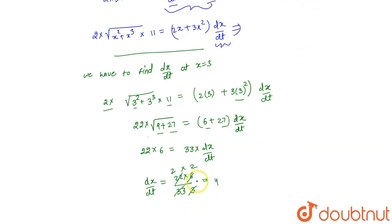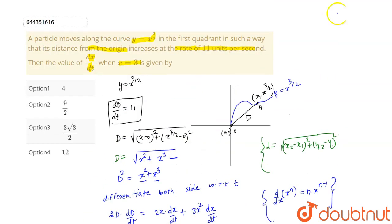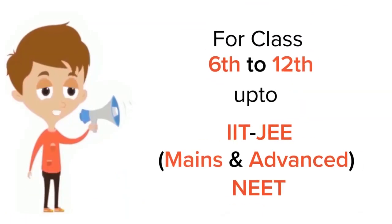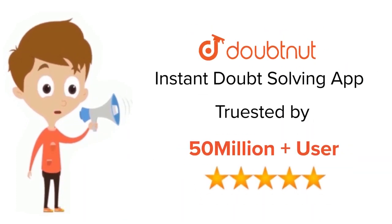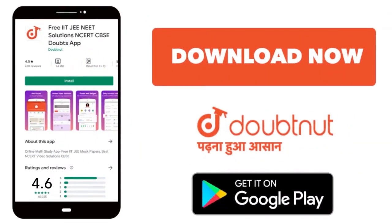So our value of dx/dt is equal to 4. The correct option is dx/dt = 4, that is option 1. For class 6 to 12th, IIT-JEE and NEET level — trusted by more than 5 crore students. Download DoubtNet today.